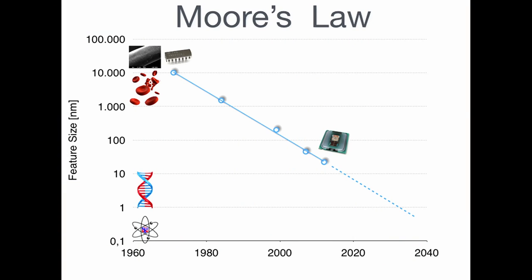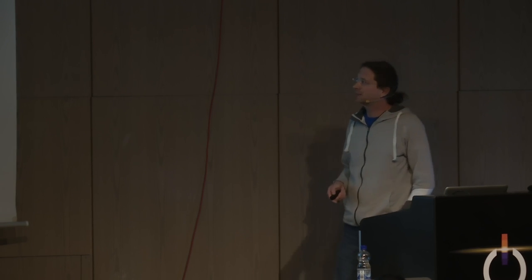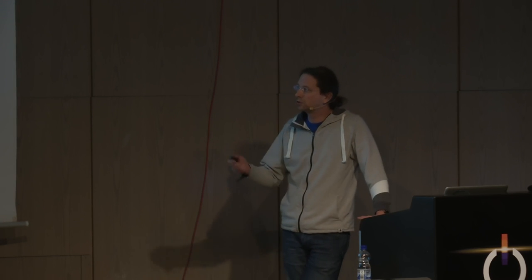If we look at the feature size — the transistor size — on such microchips, we started in the 70s with sizes of a few microns, around 10 microns, comparable to red blood cells. We're now down to 22 nanometers, which is extremely small, closing in on sizes like the diameter of DNA, which is about 2 nanometers wide. This was possible by simply scaling: you had a technology, a method of producing transistors, and you slightly improved it.